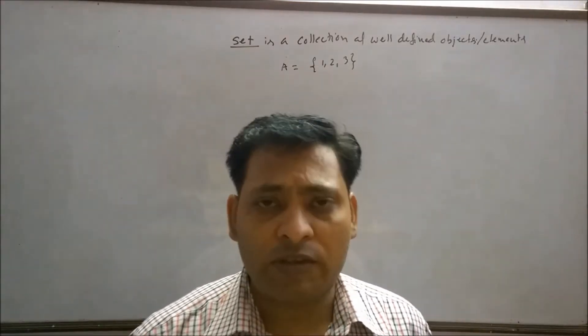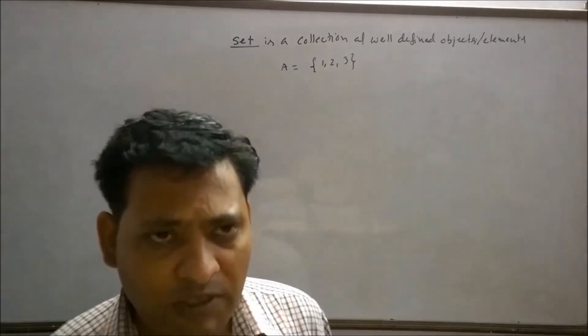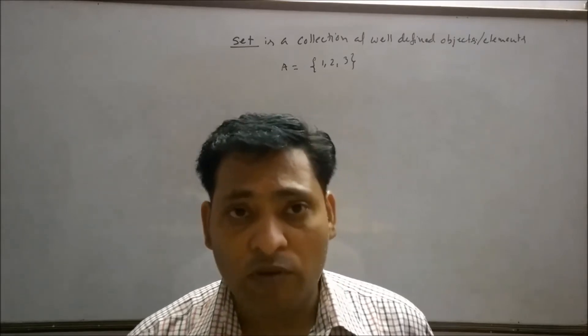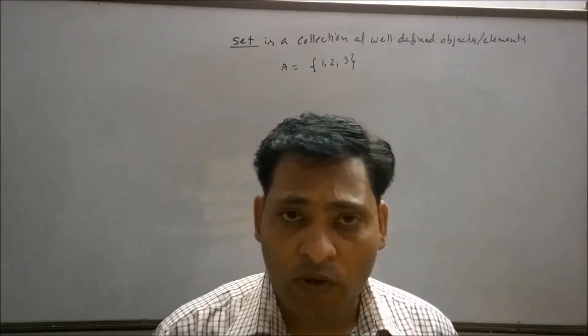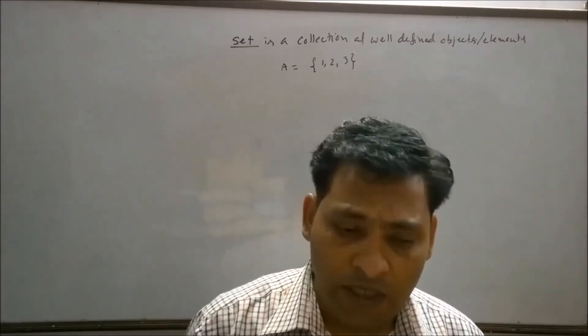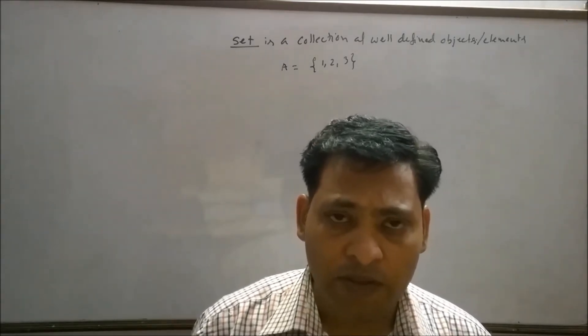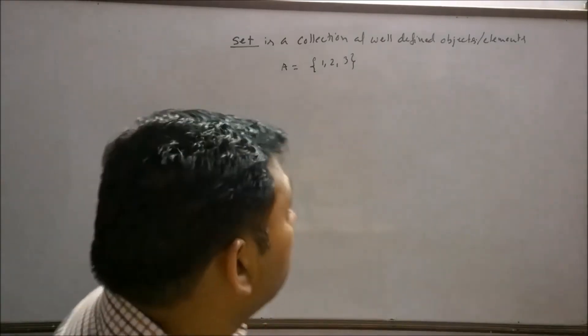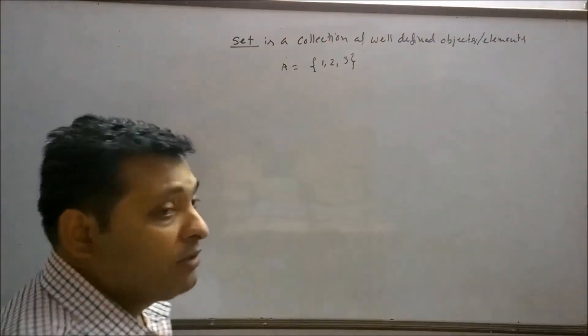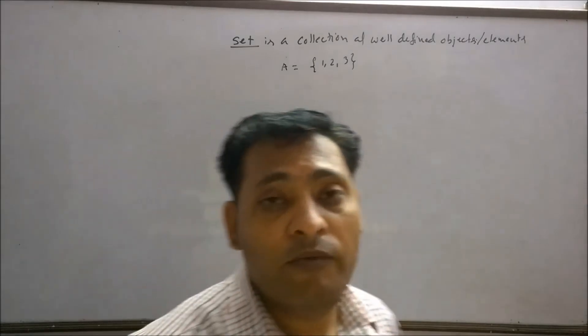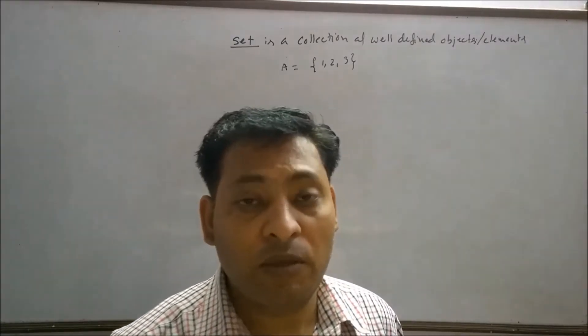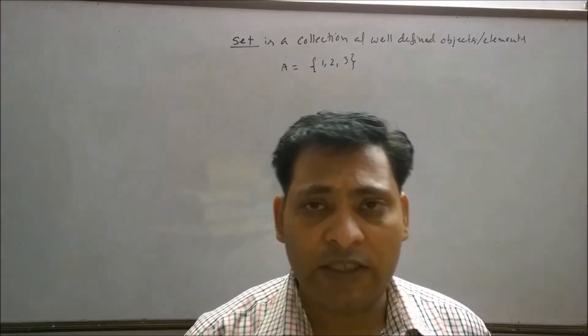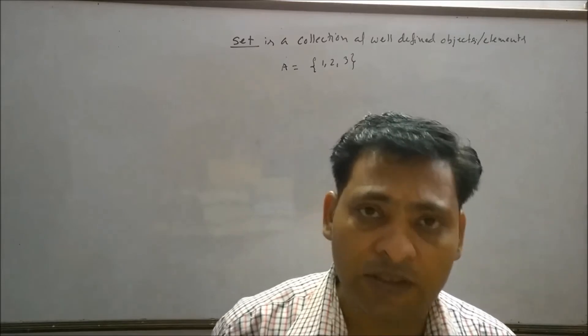Suppose if I take another set, best five players in the world. So if you suggest the name of five best players according to your choice, and I suggest best players according to my choice, the answer will not be same. So it means the best five players here cannot be well-defined elements. So best word or most word does not make elements well-defined. So it means, such sets are not considered as sets in mathematics.